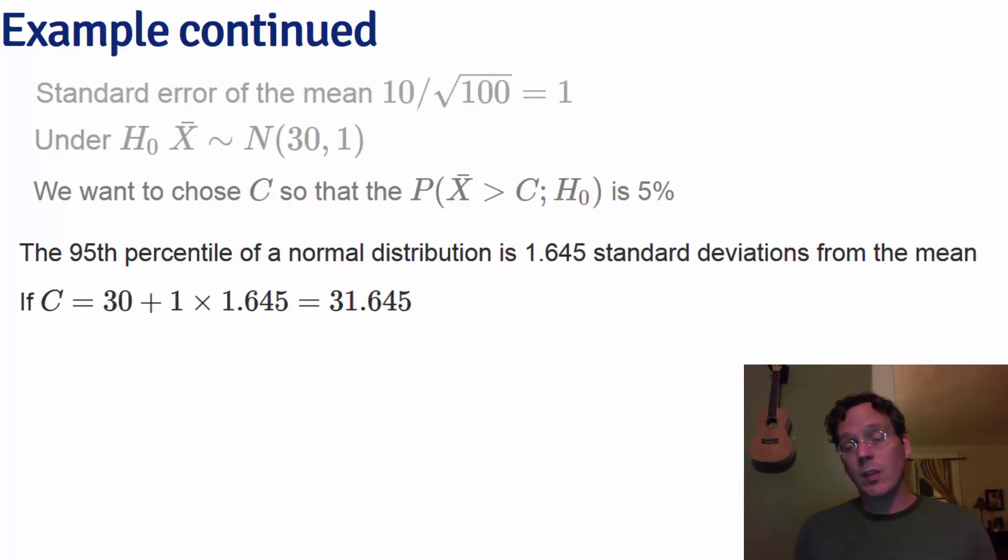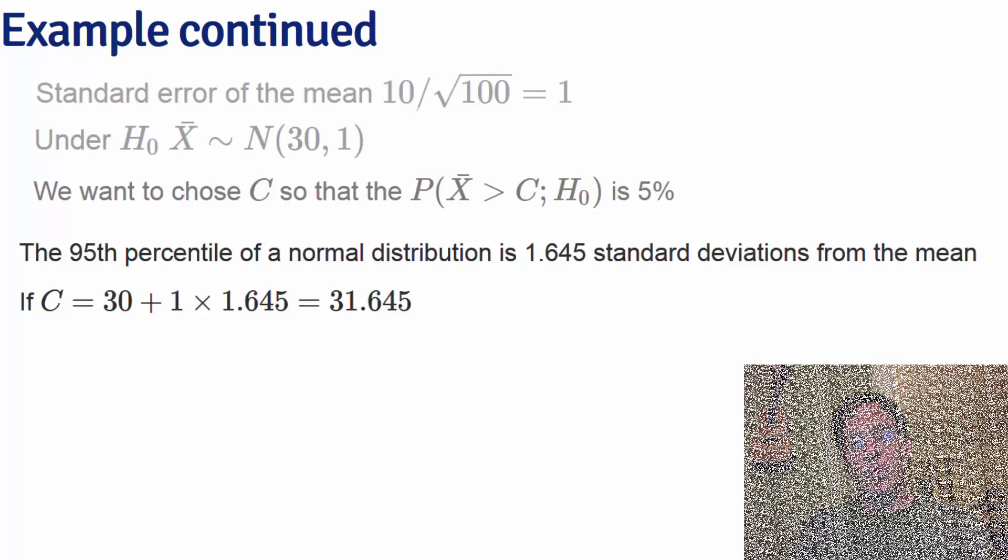So if we set the constant as 1.645 standard deviations from the mean under the null hypothesis, we will have achieved a cut point so that the probability that a randomly drawn mean from this population is larger than this is 5%.